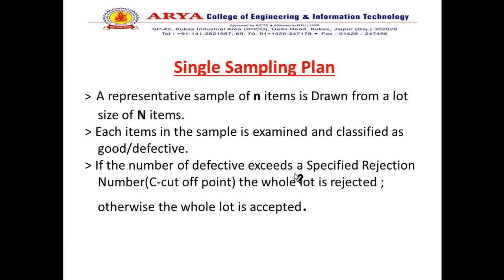In a single sampling plan, a representative sample of items is drawn from a lot of N items. Each item in the sample is examined, which raises the cost, and each item is classified as good or defective.